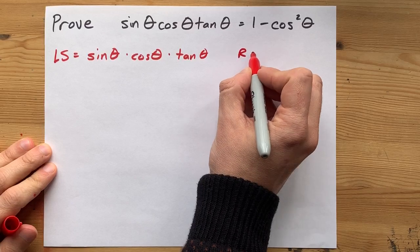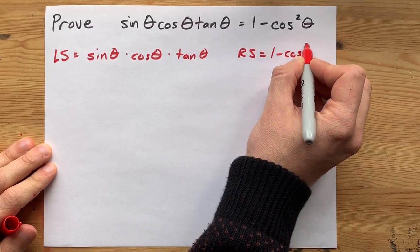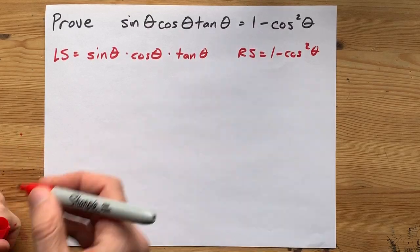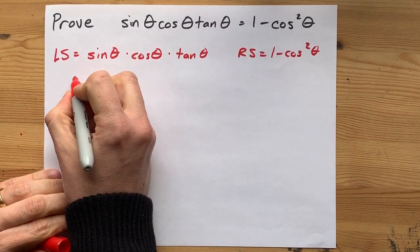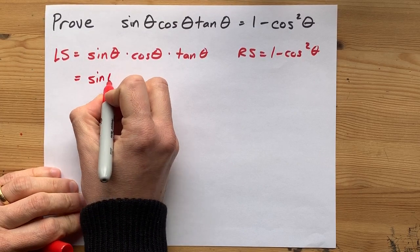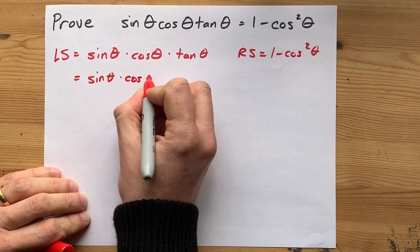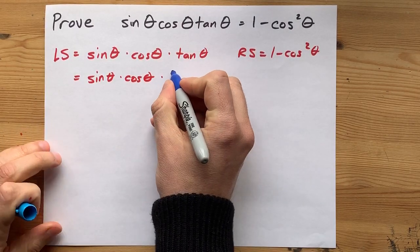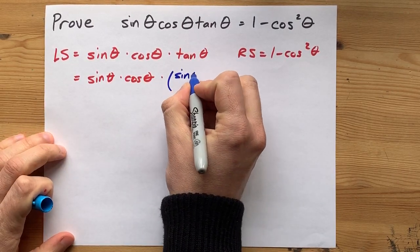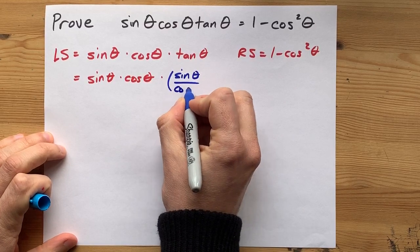So, first thing I always do is I break my identity apart into left side and right side, and then I like to replace my tan thetas with sine over cos. The fact that tan theta is the same as sine over cos is called the quotient identity, and it just helps me decrease how many different things are floating around here.